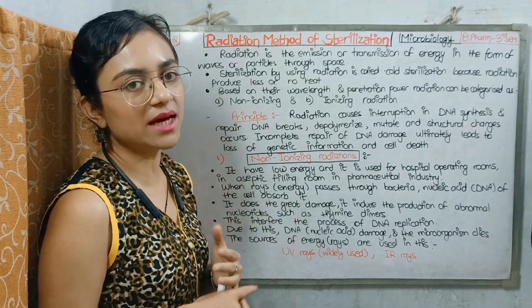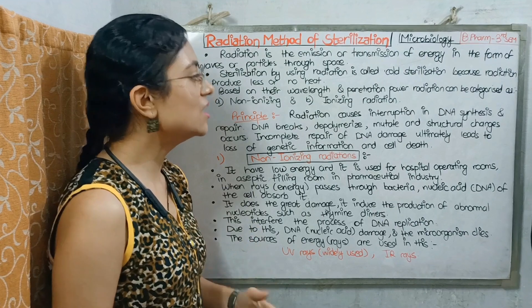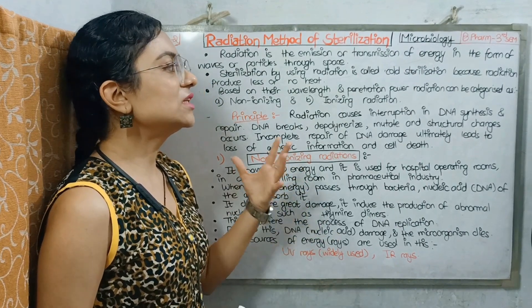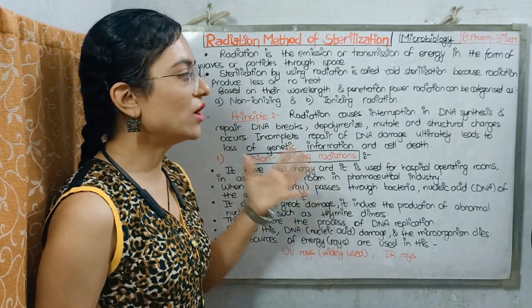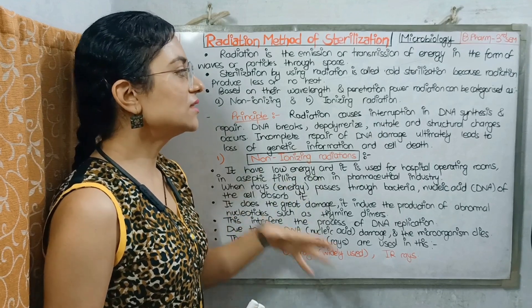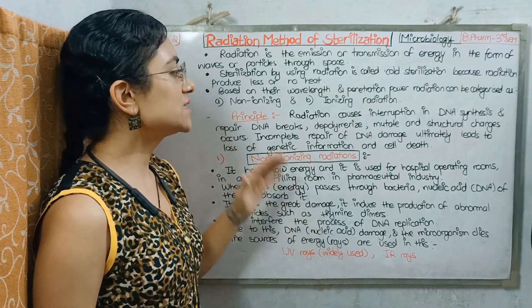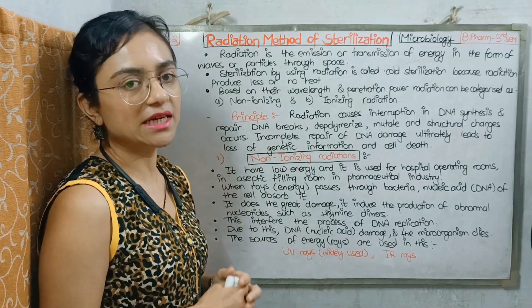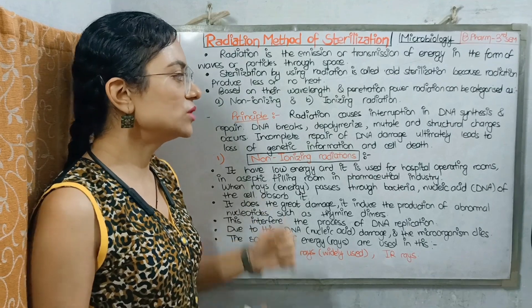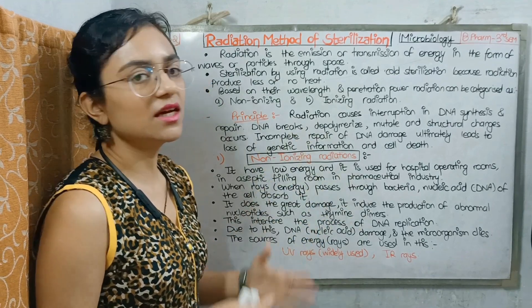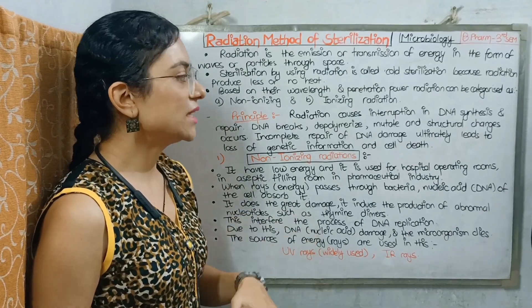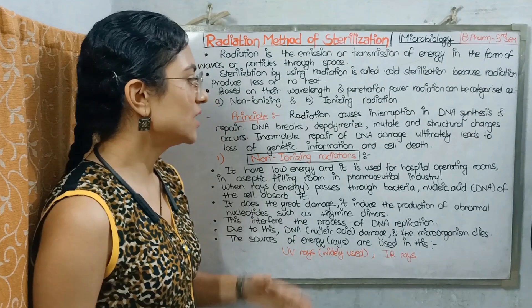Generally, what does radiation do in microorganisms? Radiation interferes with the DNA synthesis and repair process in microorganisms. The DNA of bacteria is broken and depolymerized. It undergoes mutation and some structural changes are added to the bacteria.